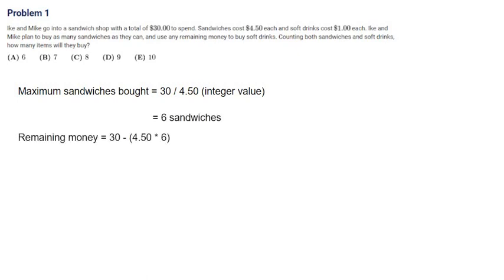Now we use the remaining money to buy any amount of soft drinks that we can. So we do 30 minus 4.5 times 6, and from that we get $3 is left over. Using that money we can buy as many soft drinks as we can, which is 3 divided by 1, which is 3. Now we have 3 soft drinks and 6 sandwiches, so in total we get 9 items, so therefore 9 is the correct answer.